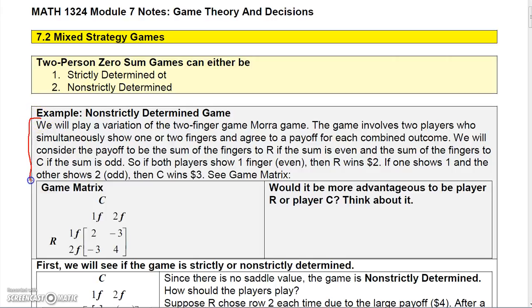We're going to play a variation of a two-finger game called Mora. The game involves two players who simultaneously show one or two fingers and agree to a payoff for each combined outcome. We will consider the payoff to be the sum of the fingers to R if the sum is even and the sum of the fingers to C if the sum is odd. So if both players show one finger, even, then R wins two dollars. If one shows one and the other shows two, that would be three fingers, so C wins three dollars.